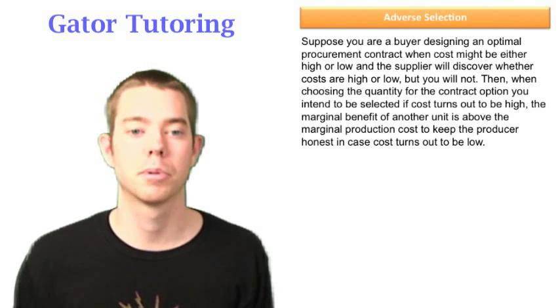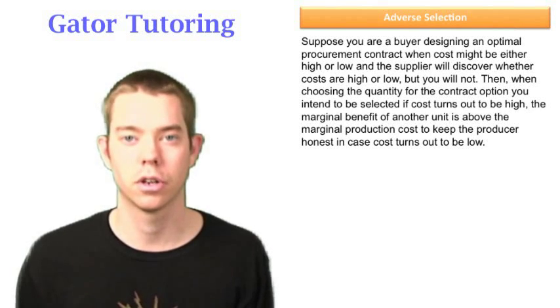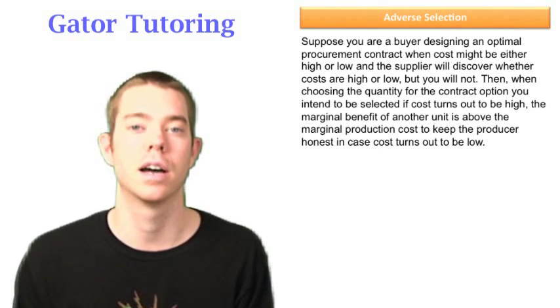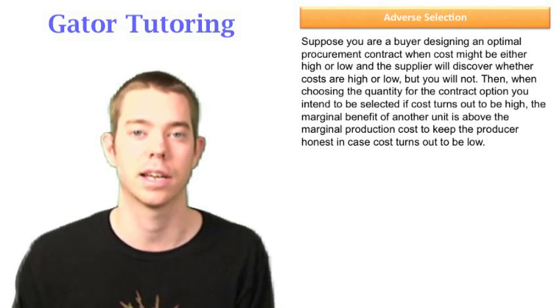It says, suppose you are a buyer designing an optimal procurement contract, and then it goes on to tell us that costs could either be high or low. Again, immediately we want to identify that the word procurement lets us know this is adverse selection.